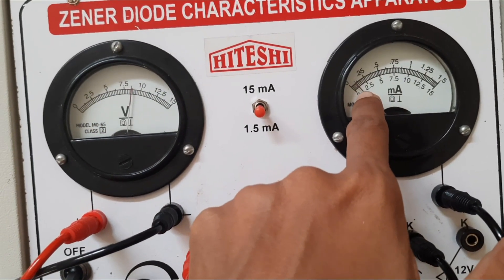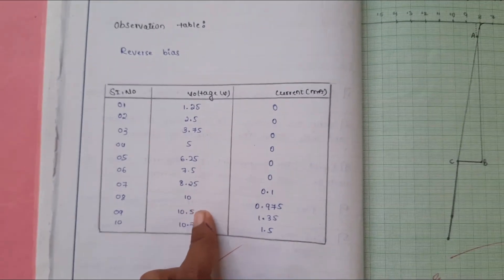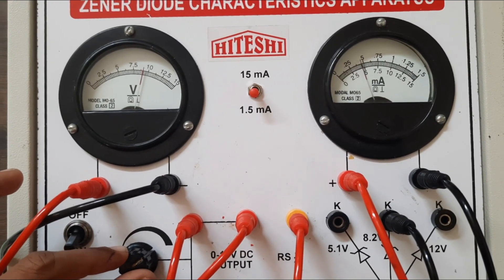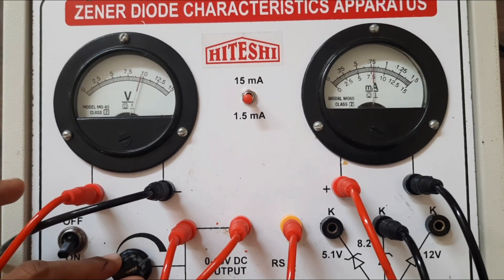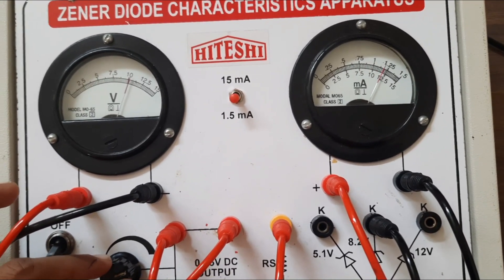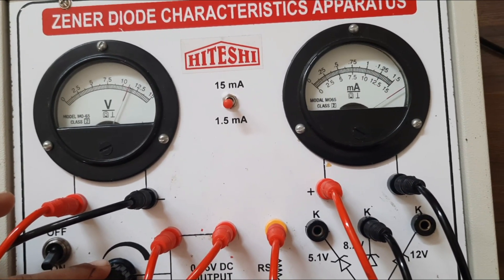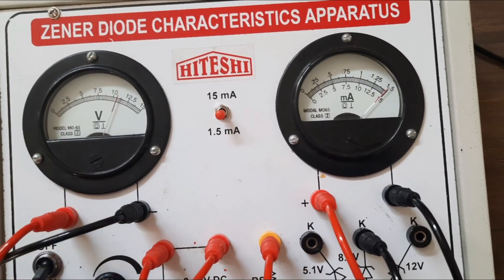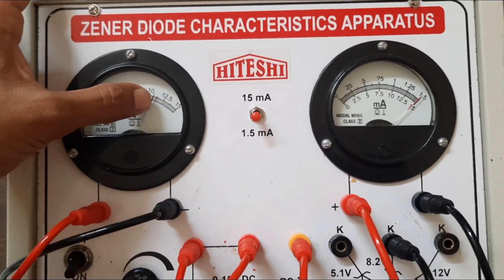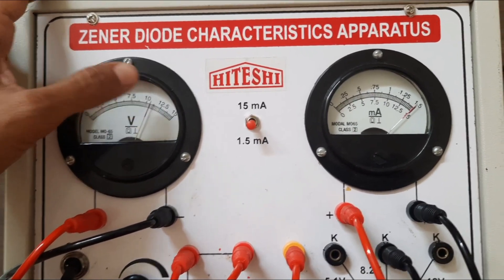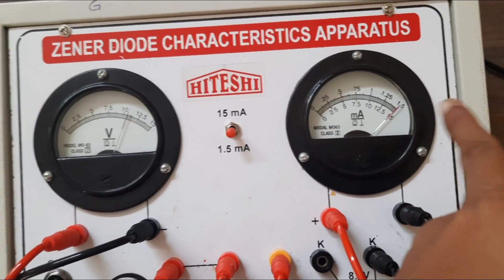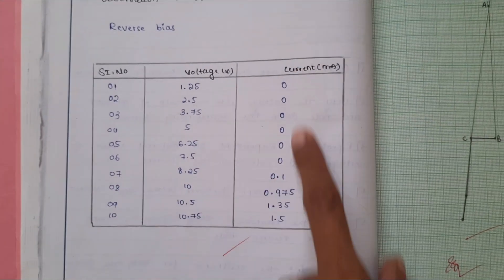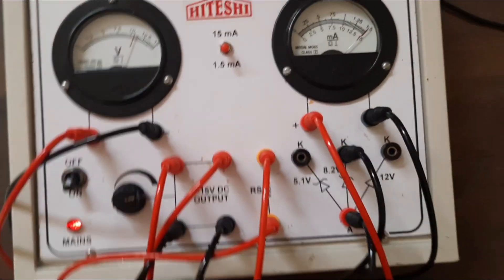Let us increase the voltage further to see how the current varies. Above 8 to 9 V you can clearly see a change in current — it increases. The maximum value on this scale is 1.5 mA. For more than 10.7 or 10.8 V, the current reading reaches 1.5 mA. The recorded value is around 10.75 V with a corresponding current of 1.5 mA.